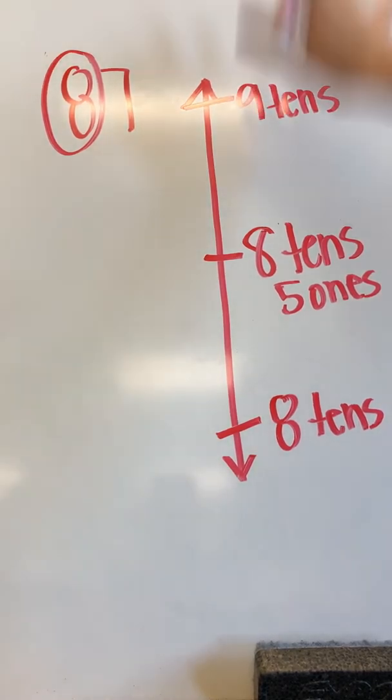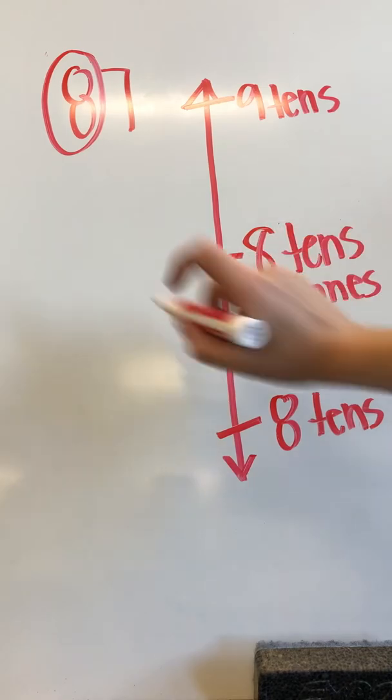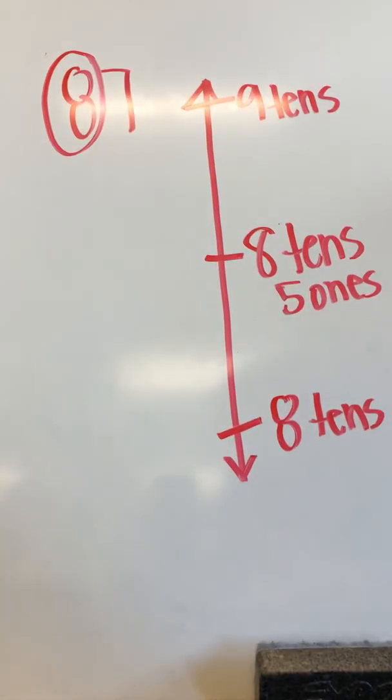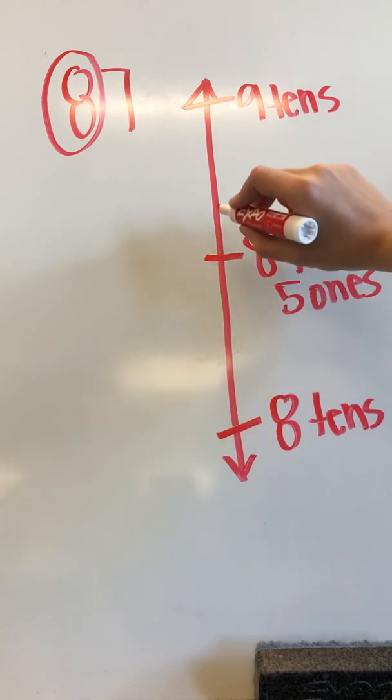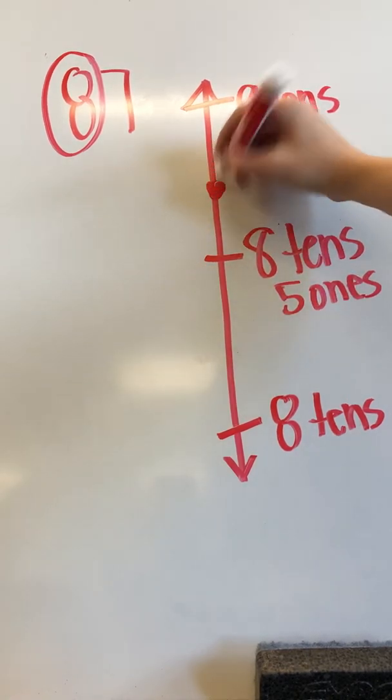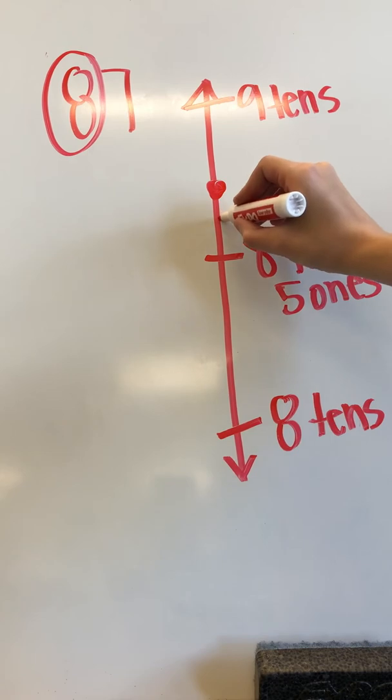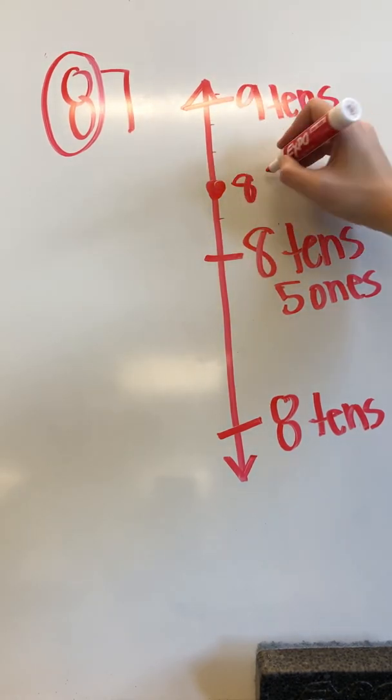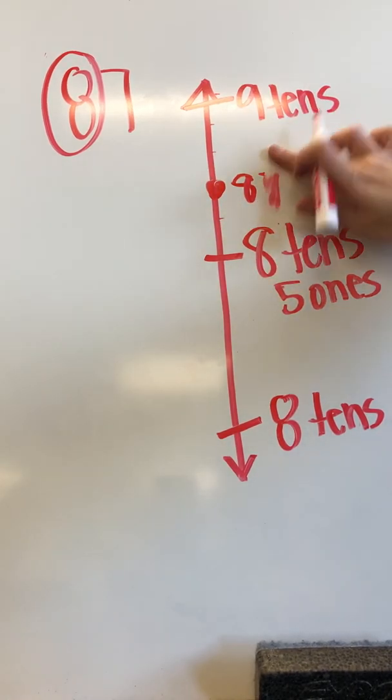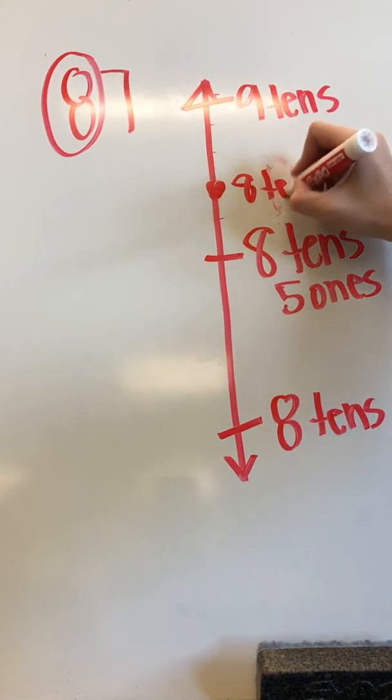Now that we have all this finally labeled, we can finally plot 87 on our number line. So let's see where 87 would be. Hmm, 85. I think it'd be right around here. Because I think this is 85. This is 86, 87, 88, 89, 90. So this would be 87. Or if we're doing it in unit form, 8 tens, 7 ones.